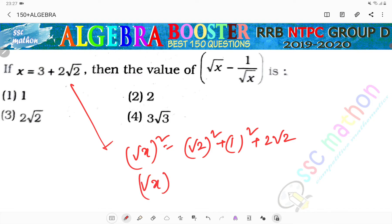So root x whole squared becomes root 2 plus 1 whole squared. Therefore root x equals root 2 plus 1. Then 1 by root x equals...